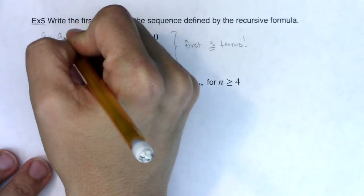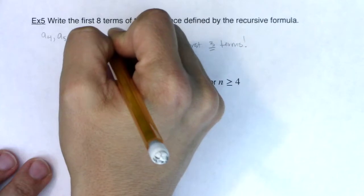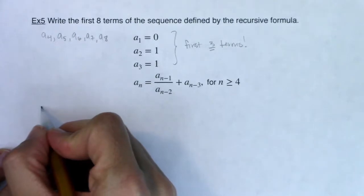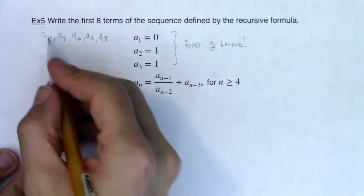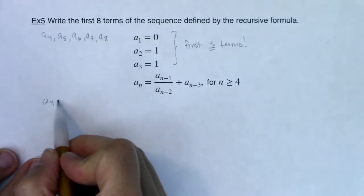So these are the numbers we're still looking for, or I should say these are the terms that we're still looking for, because we have a one through three. So let's make this work. So it says if n is greater than or equal to four, and I do want n to be equal to four, because I want to start this process.